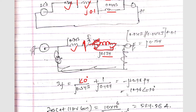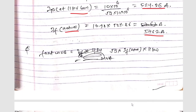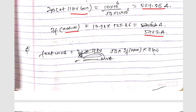The base current at 11 kV side is: 10 × 10⁶ / (√3 × 11 × 10³) = 524.86 ampere. The actual fault current = 10.96 × 524.86 = 5762 ampere. The fault MVA = √3 × If(actual) × 11 kV, so solving this gives us the fault MVA at the 11 kV bus.